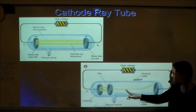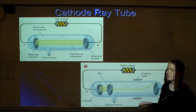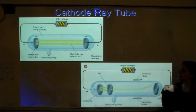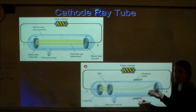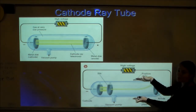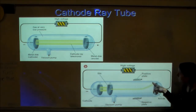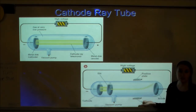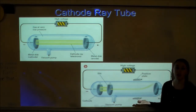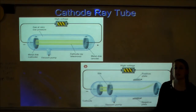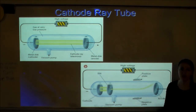He filtered the beam into a thin stream and then tested it using a positive and a negative plate — like magnets. When he put a positive plate and a negative plate on opposite sides, the beam bent towards the positive plate. What's attracted to positive? Opposites attract, so if it bent toward the positive plate, it must be made of negative particles. That's how he determined the charge.